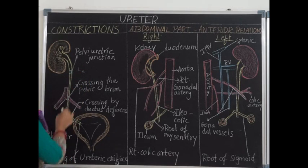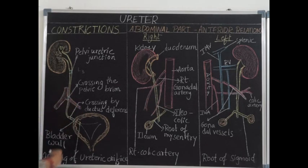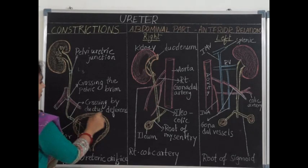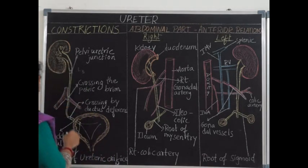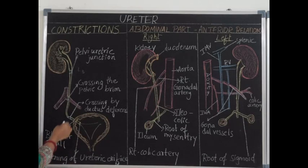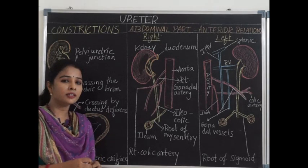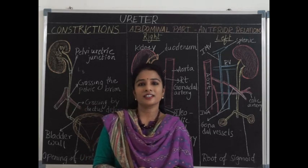The second constriction is present at the level of the pelvic brim, just in front of the bifurcation of the common iliac artery. The third constriction is at the site where the ductus deferens in males, and the broad ligament of the uterus in females, crosses the ureter. The fourth site of constriction is just within the wall of the urinary bladder. The fifth constriction is present at the site of the ureteric opening into the bladder.